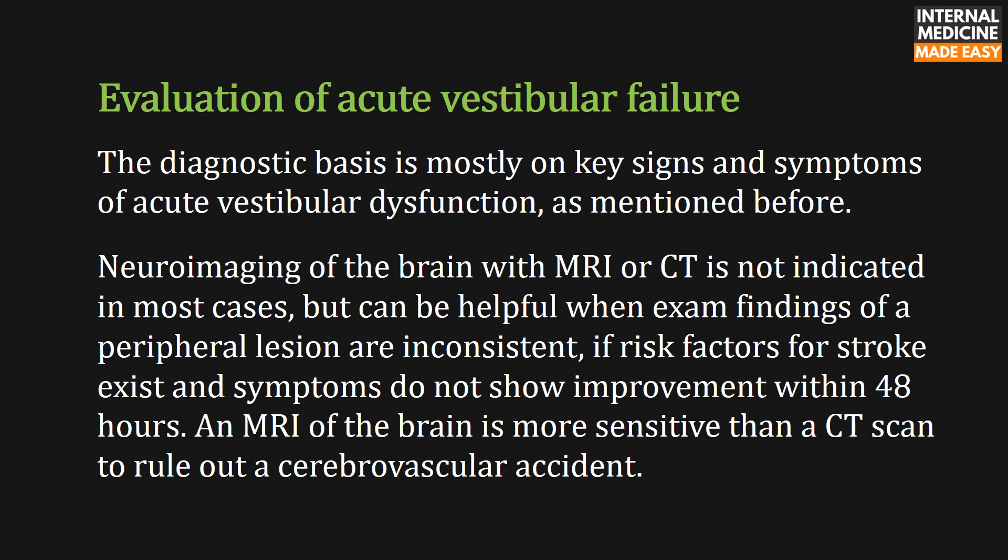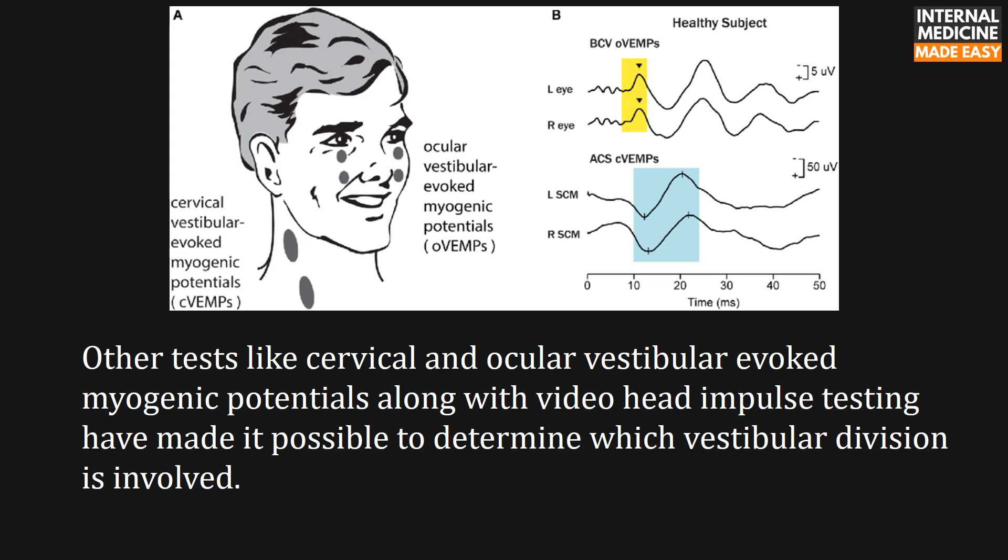The diagnostic basis is mostly on key signs and symptoms of acute vestibular dysfunction. Neuroimaging with MRI or CT is not indicated in most cases, but can be helpful when exam findings are inconsistent with a peripheral lesion, if risk factors for stroke exist, or if symptoms do not show improvement within 48 hours. MRI of the brain is more sensitive than CT to rule out a cerebrovascular accident. Other tests like cervical and ocular vestibular evoked myogenic potentials, along with video head impulse testing, can determine which vestibular division is involved.